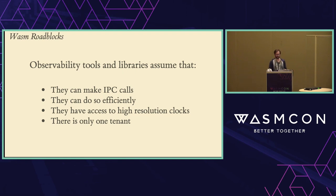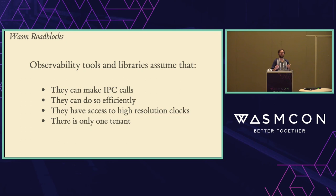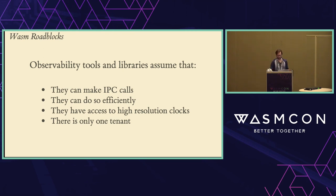The other assumption is there's only one tenant. We built all these tools for a world where if you install an APM tracer in your code, that's your code — it goes to your Datadog or your Honeycomb. But with Wasm, we're kind of the multi-tenant agents now. These tools don't really support that — they assume all of it is your data. When in actuality, if someone is uploading a module to our IOTA system, we may want to actually send that to their Datadog instance, which is not something these tools assume.